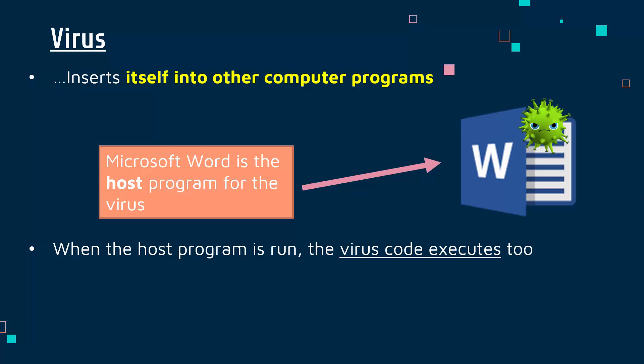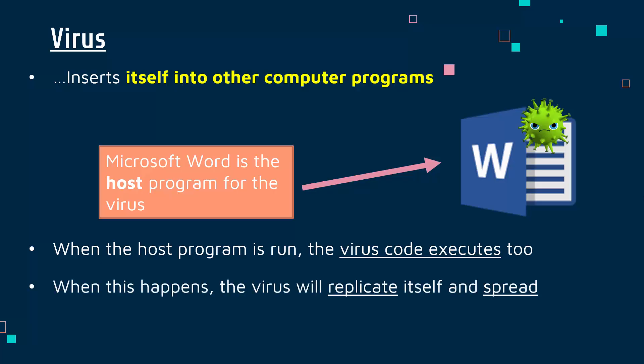Whatever the virus does - and it really depends what the designer wants - it will happen once you open this legitimate program. Maybe the virus causes some of your files to get deleted, maybe it harvests personal information, maybe it tries to lock your computer, because ransomware is an example of a virus. But also, the main way a virus exists and continues to exist is by spreading. When you run the host program, the virus is able to replicate itself and spread into other programs - maybe it starts off in Word, ends up in Chrome, and then in Fortnite as well - making it much harder to remove.